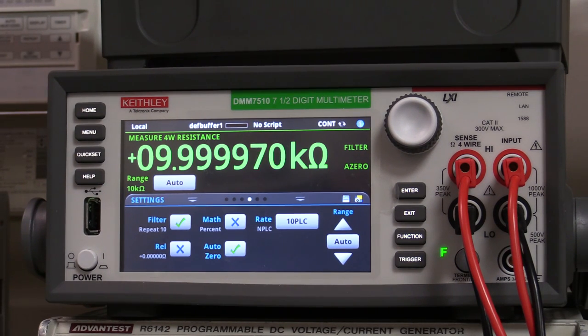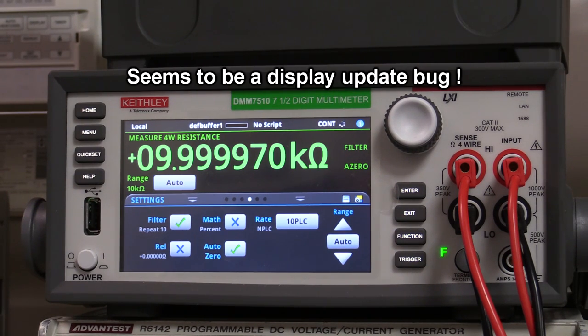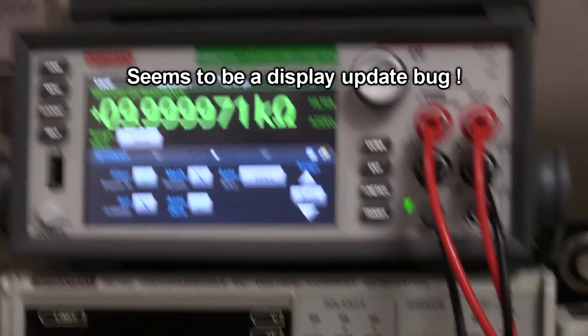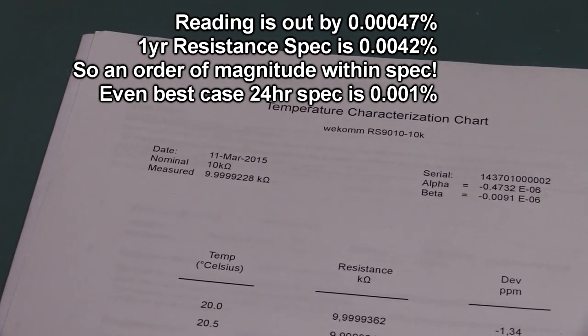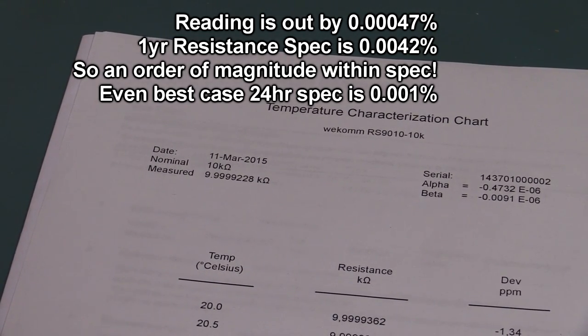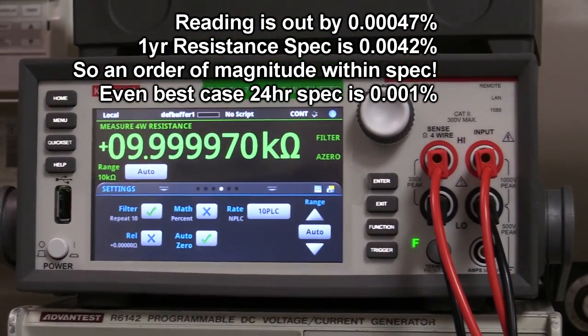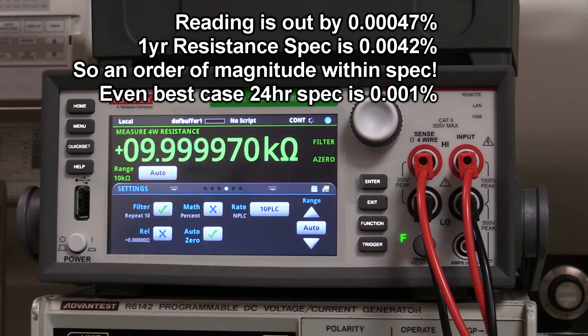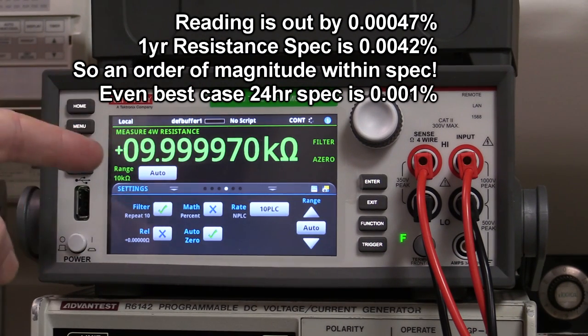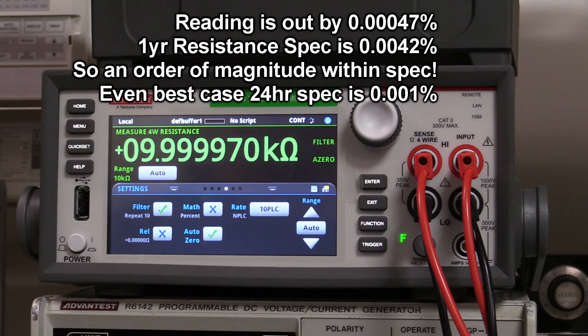It's saying 9.999970 and of course the value that's supposed to be is 9.9999228. So we've got discrepancies here. I haven't actually checked if that's within spec of the meter or not, it most likely is, would be my guess.